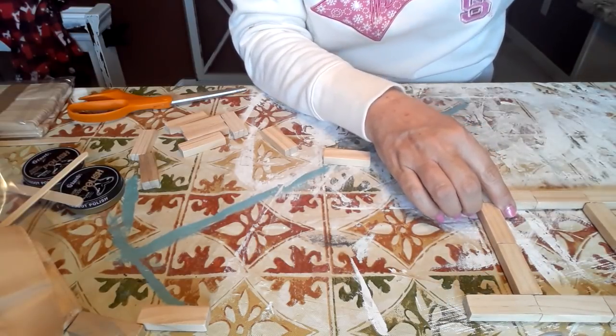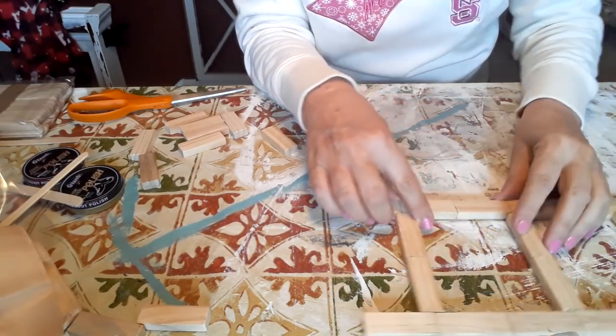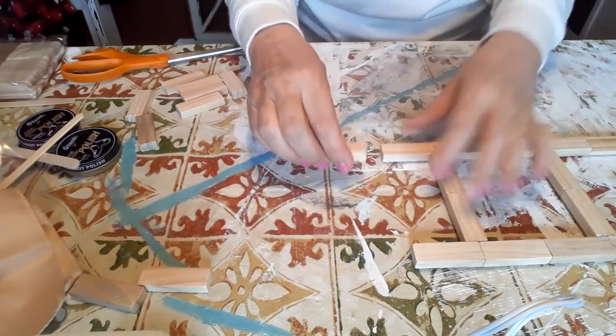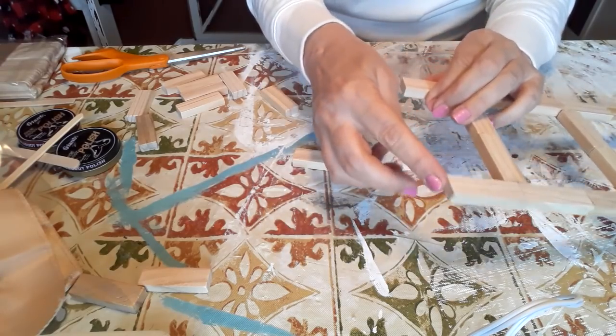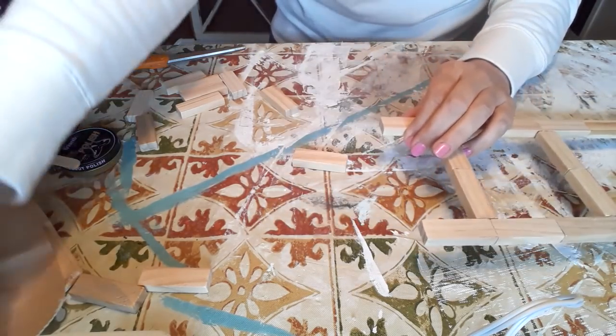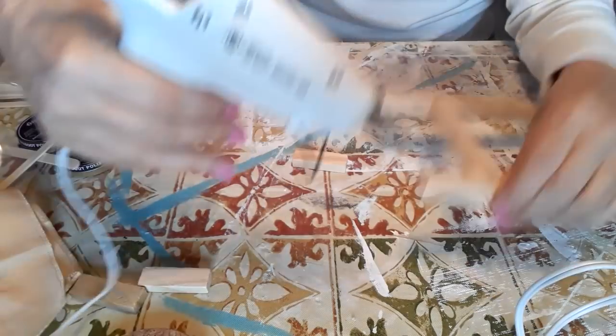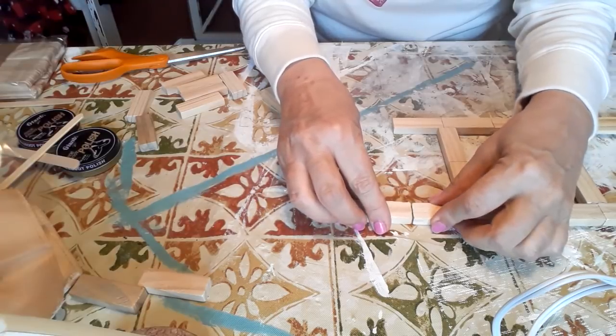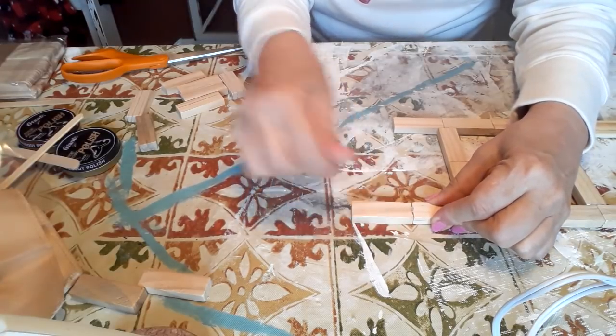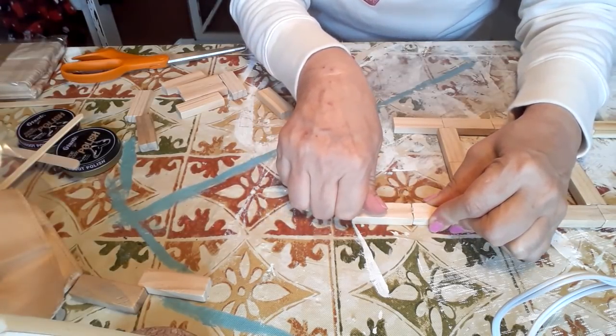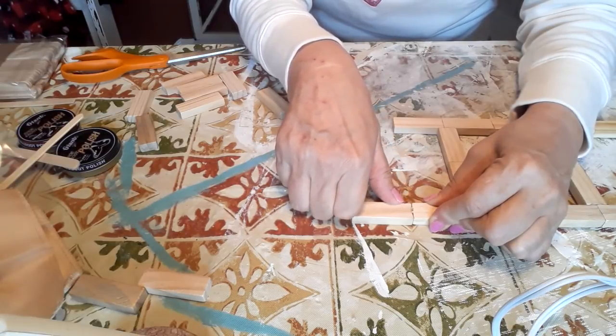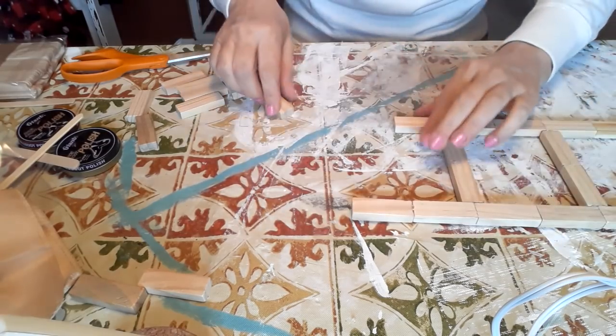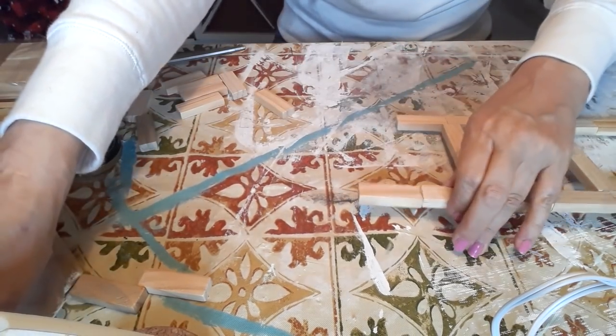So what I'm going to do first is on this piece here, I'm going to put my hot glue on this end piece. You don't want to put on too much of it because you want these two pieces to be as tight together as you possibly can. And I think putting more hot glue on there makes it more difficult to get them really joined.